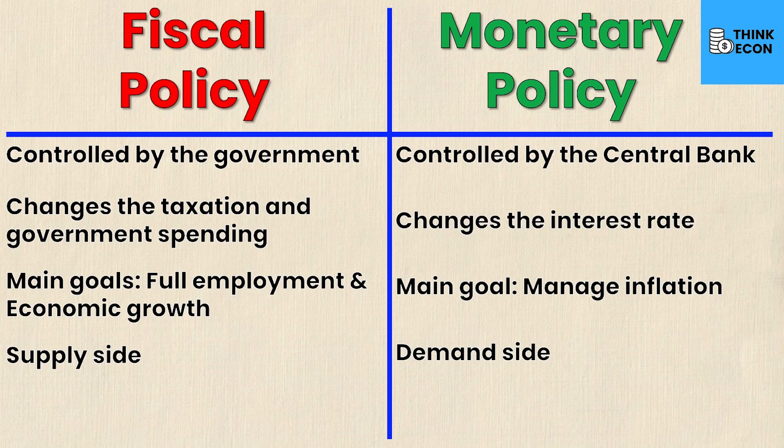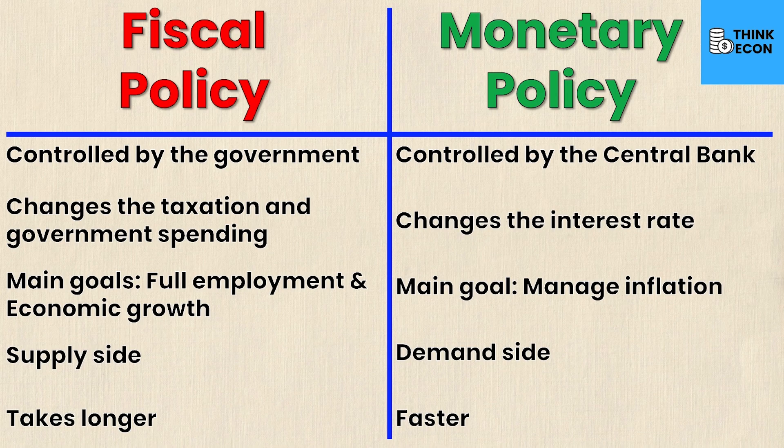Finally, the fifth difference is that fiscal policy inevitably takes longer while monetary policy is faster to implement. The reason for this is primarily due to who runs the show. The government runs fiscal policy, and that takes legislation and lots of red tape, versus monetary policy which is done by the central bank and is pretty immediate. When the overnight interest rate changes, banks and financial institutions react very quickly, and that gets reflected to the general public much faster.